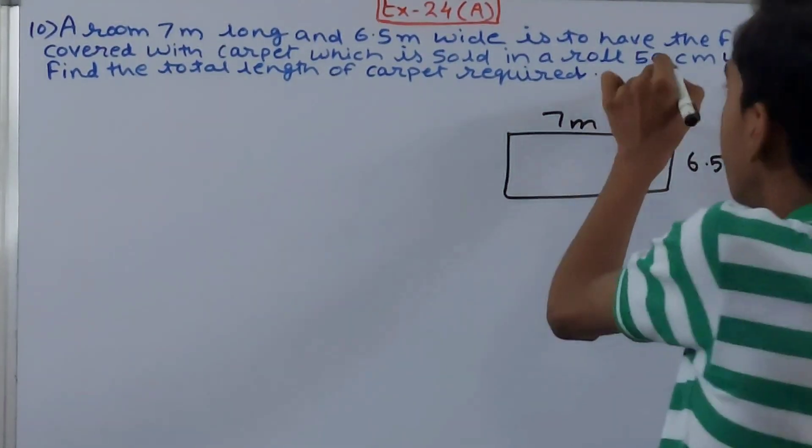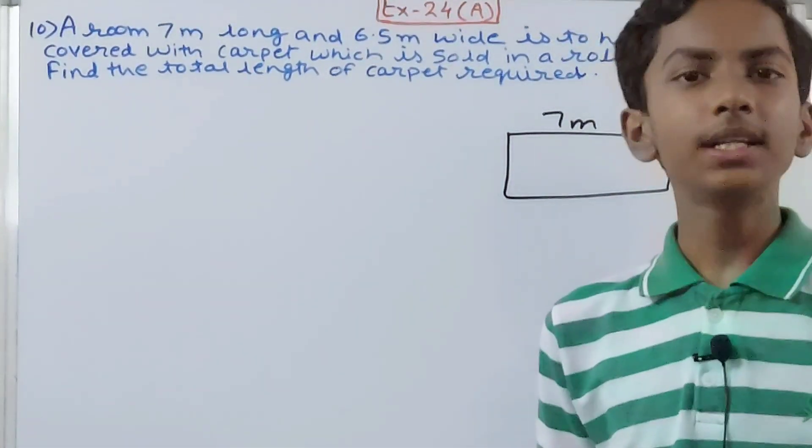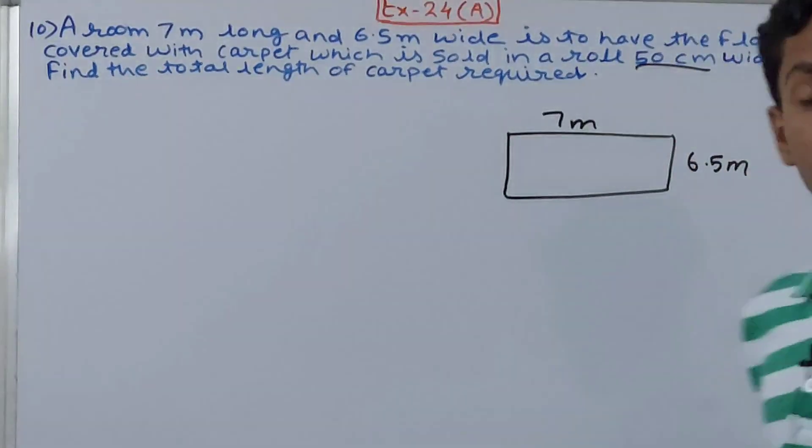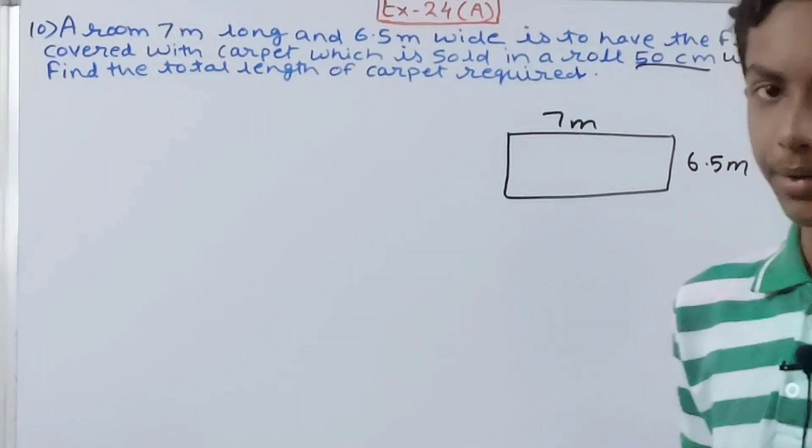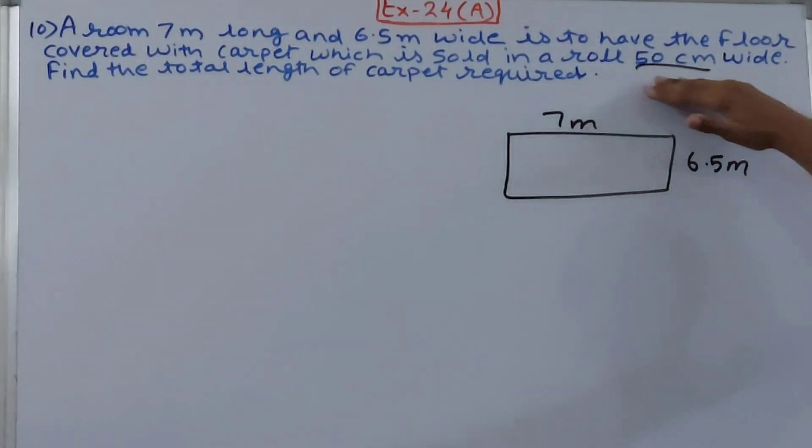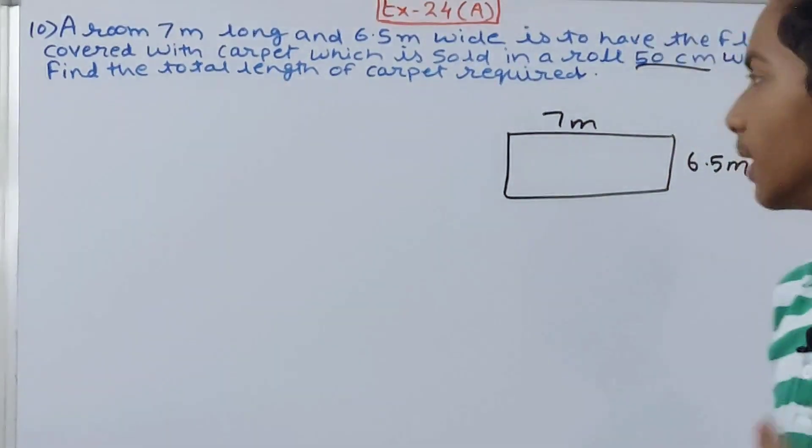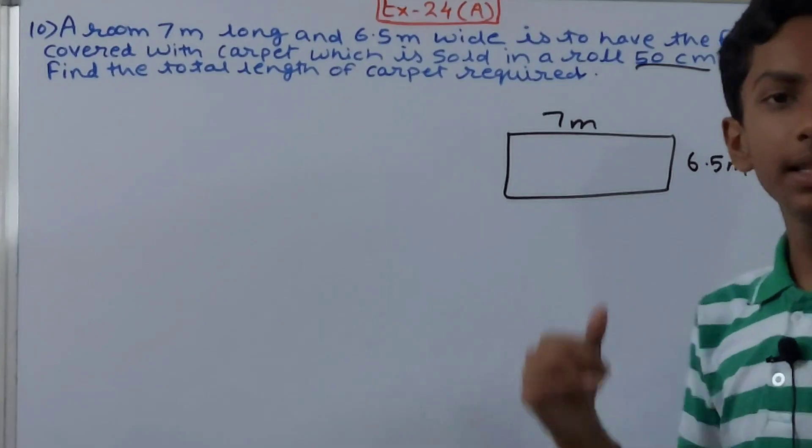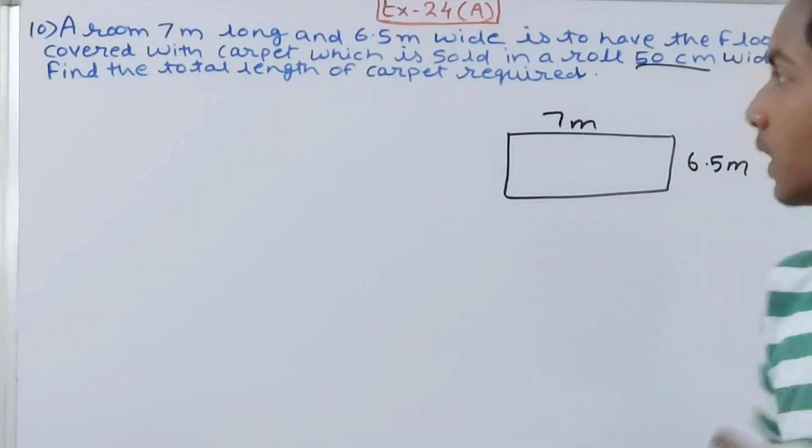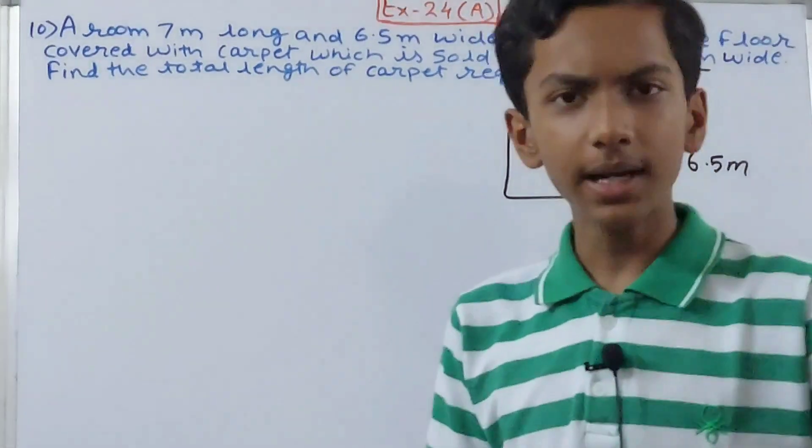The carpet is sold in a roll 50 centimeters wide. First we will find the number of rolls required. In one roll there is 50 centimeter wide carpet. If we know the number of rolls, then we can find the width of carpet also. If there are 3 rolls, we multiply 50 by 3; if 4, then 50 by 4, and so on.